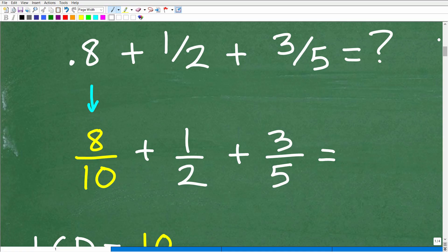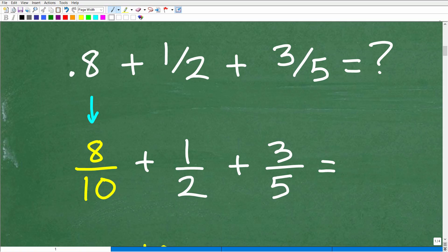Okay, so let's go ahead and get into what we need to do. So here we have 0.8 plus 1 half plus 3 fifths. Well, there's different ways you can approach this problem, but the easiest way by far is to convert this decimal into a fraction. So we're working with fractions. We already have two fractions here. So instead of converting these fractions into decimals, let's just go ahead and take this 0.8 and write it as a fraction.